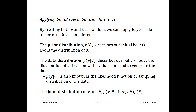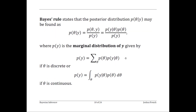The data distribution describes our beliefs about the process that generated the data, given that we knew what the parameter vector theta actually was. Using these two distributions allows us to construct the joint distribution of y and theta — p(y|θ) — by multiplying the data distribution by the prior distribution. The last ingredient is the marginal distribution of y, obtained by summing or integrating the joint distribution over theta. Once we have these, we can obtain the posterior distribution p(θ|y) by taking the product of the data distribution and the prior distribution and dividing by the marginal distribution of y.